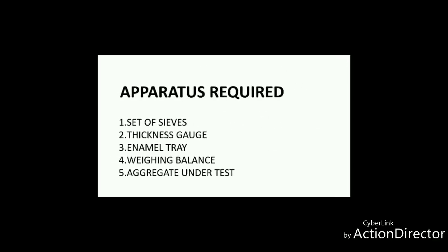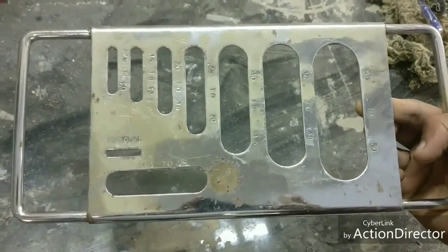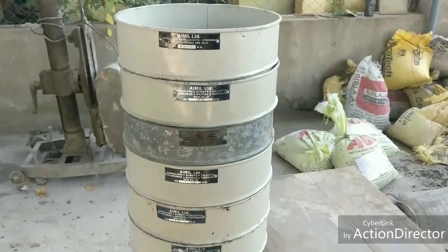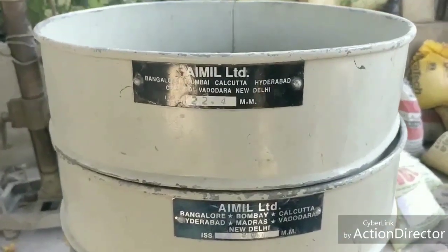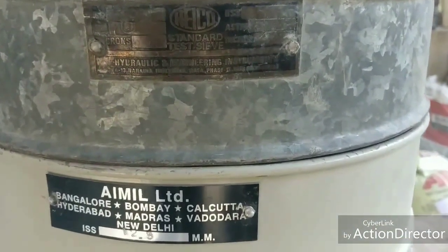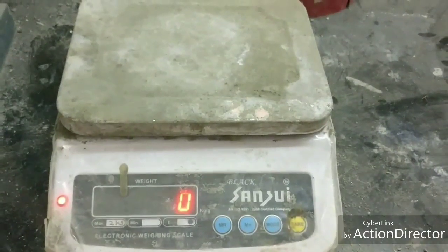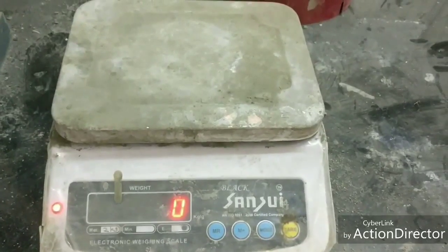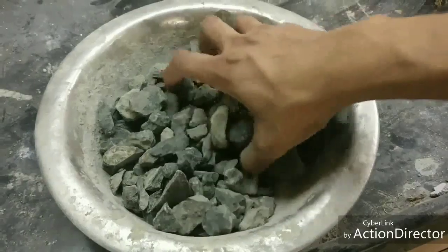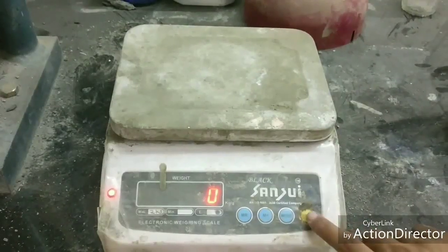The various equipment used are: the thickness gauge, which shows the width of the slot corresponding to the consequent sieve; a set of sieves; an enamel tray; a weighing balance; and the aggregate under test. Along with this, we need an observation sheet to record the readings.